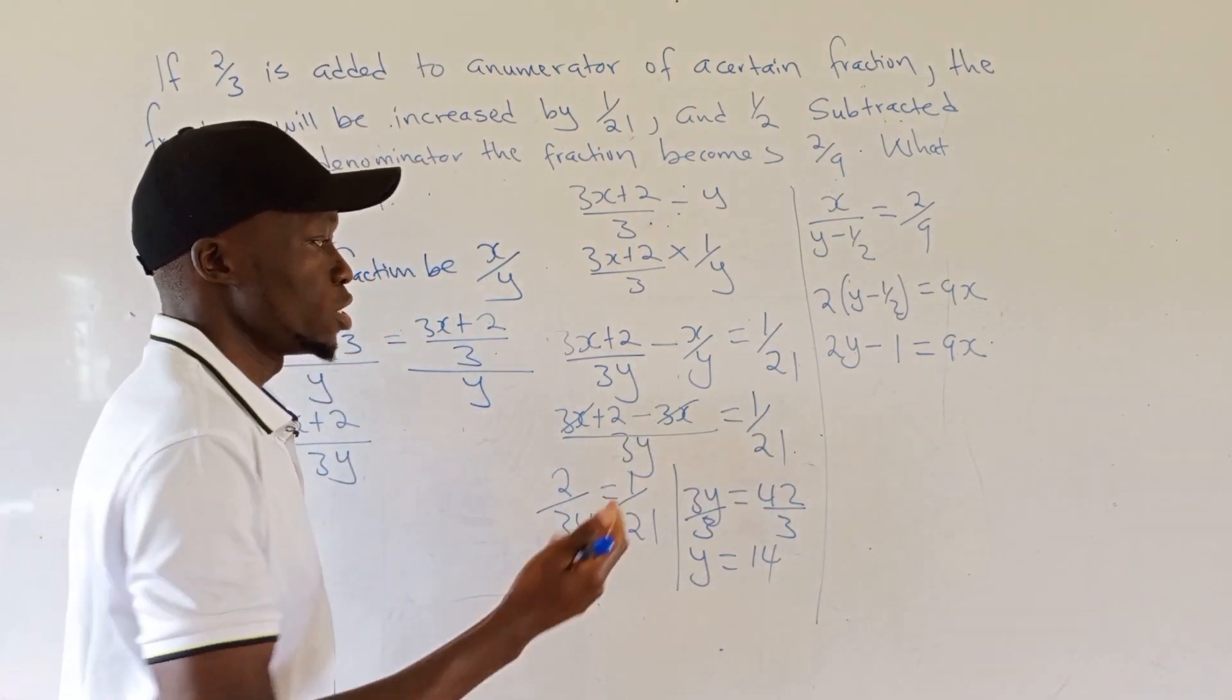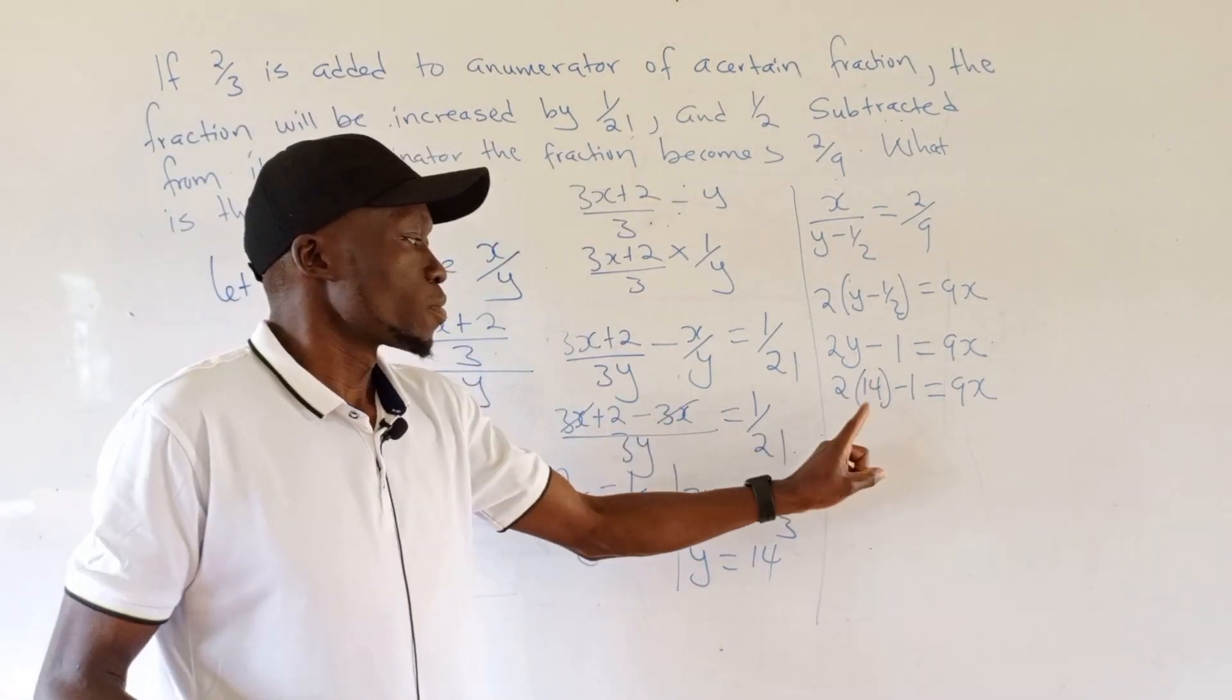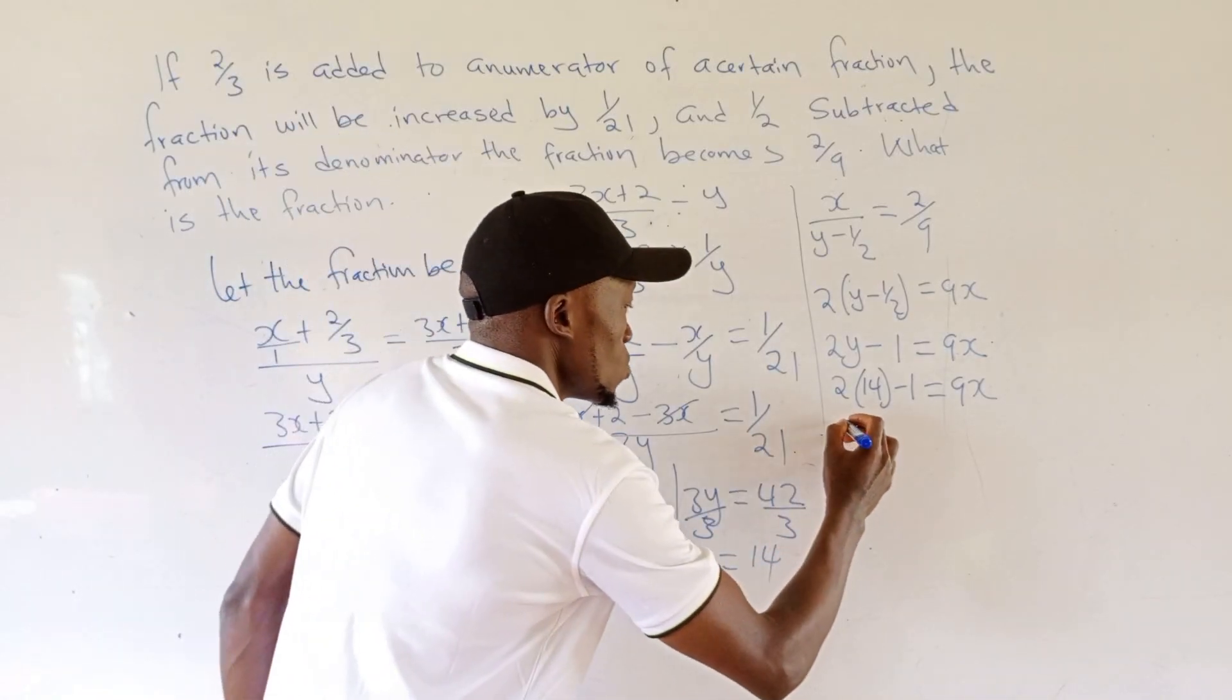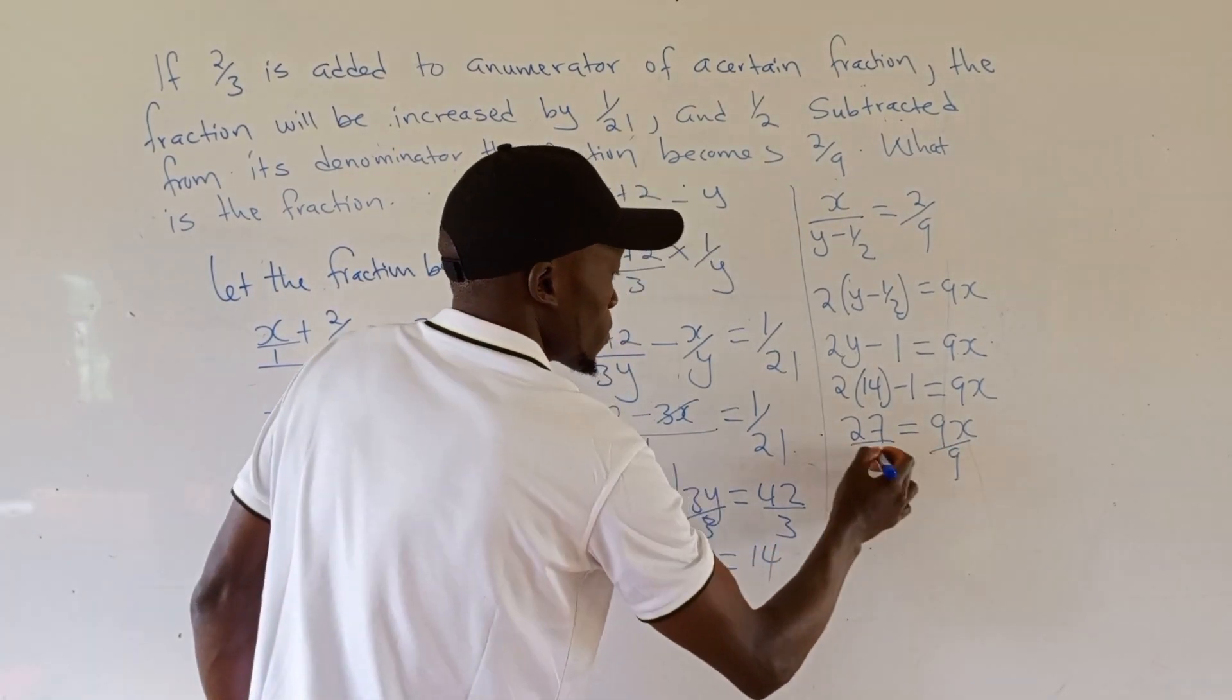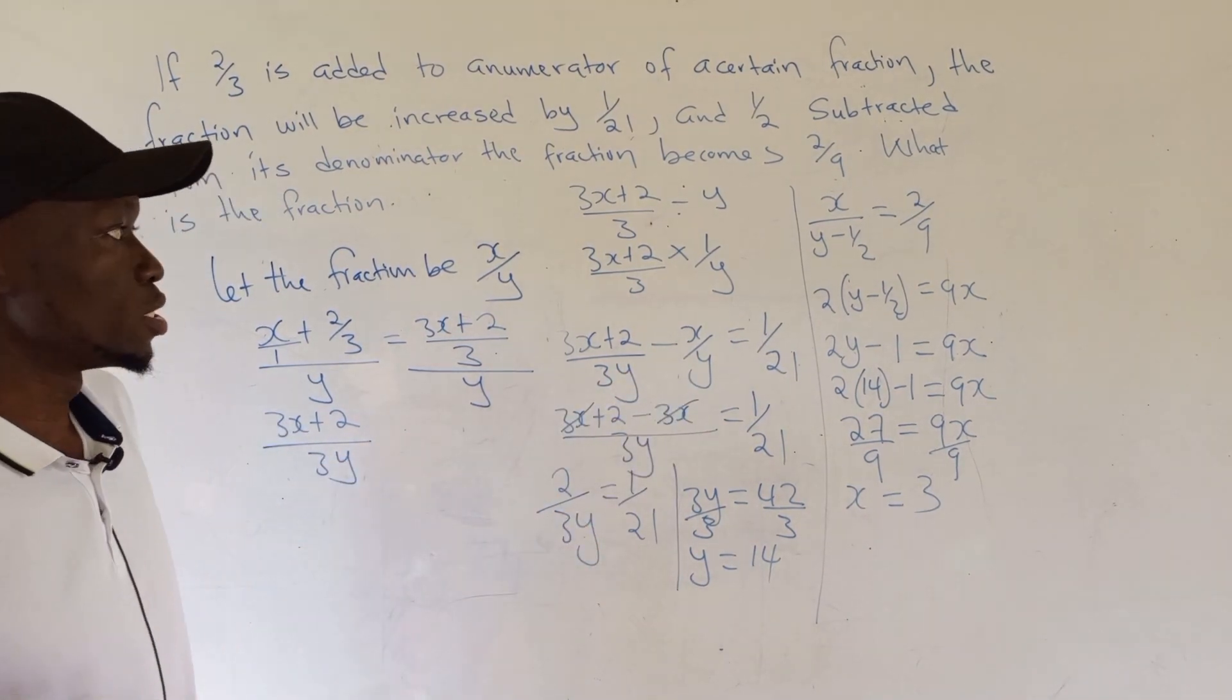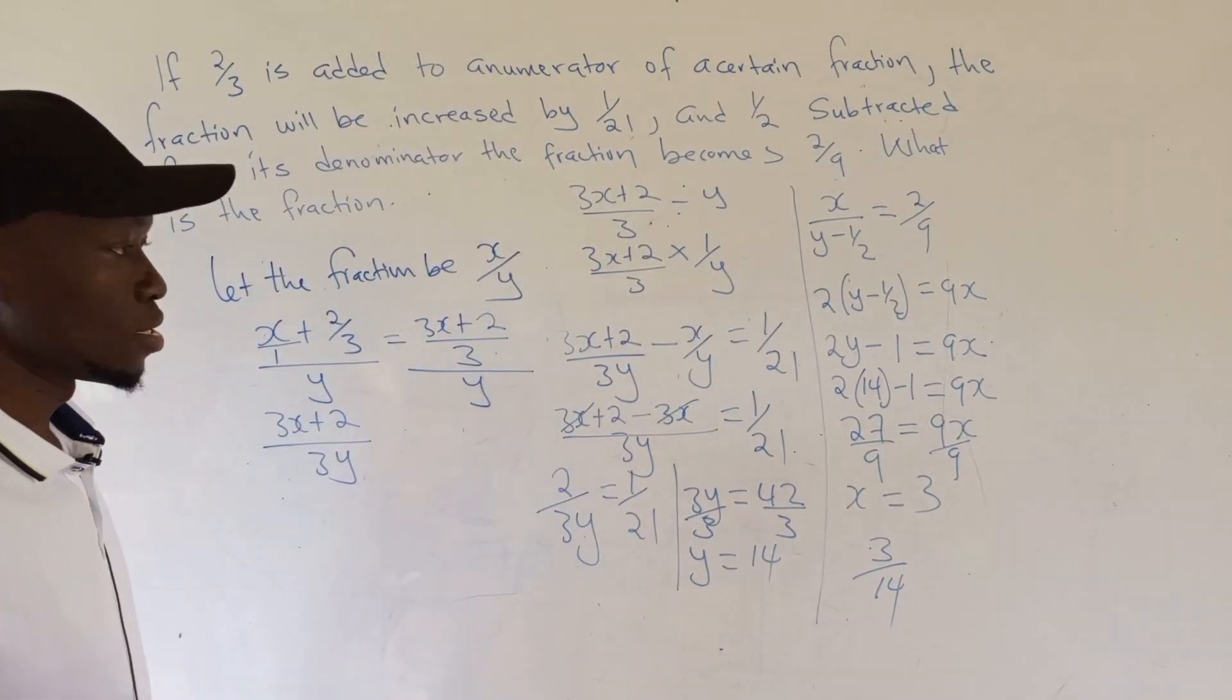We replace y with 14: 2(14) - 1 = 9x. Simplifying: 2 times 14 is 28, minus 1 is 27. So 27 = 9x. Dividing both sides by 9: x = 3. The value of x is 3 and y is 14, so our fraction is 3/14. That's the answer.